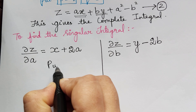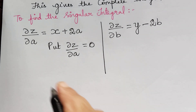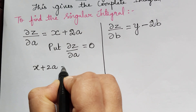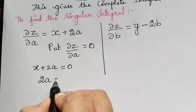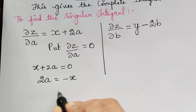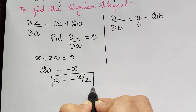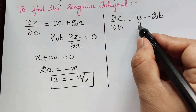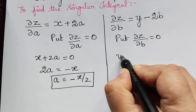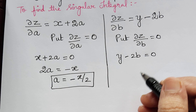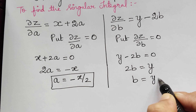The next step is to put ∂z/∂a = 0. So we have x + 2a = 0, from which 2a = -x and so a = -x/2. In a similar way, putting ∂z/∂b = 0, we get y - 2b = 0, from which 2b = y and so b = y/2.